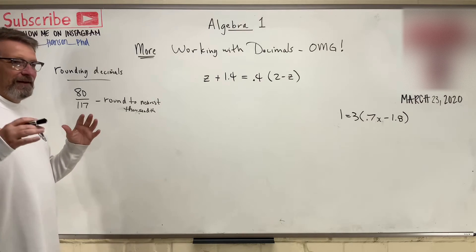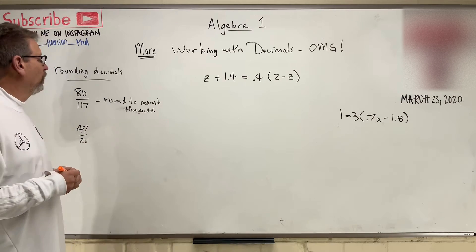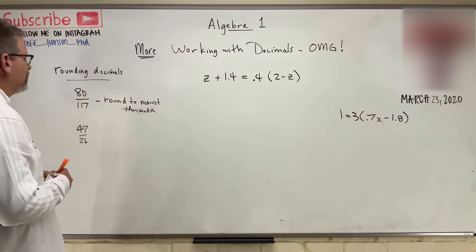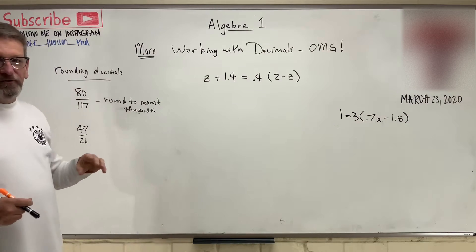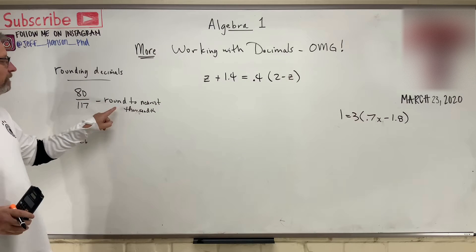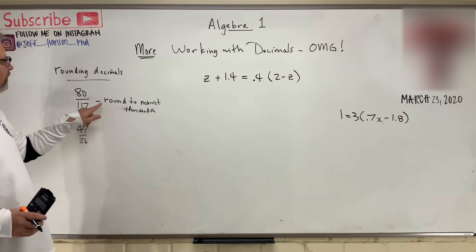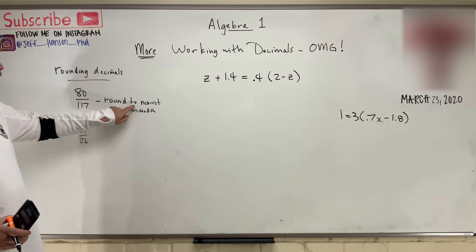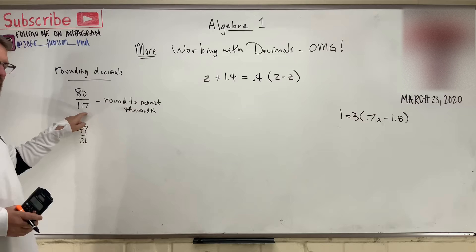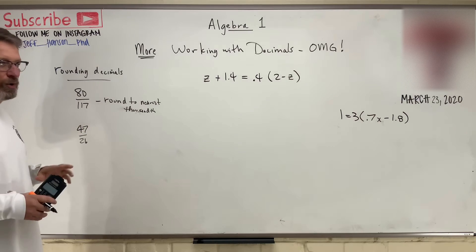Let's talk about decimals. First thing, let's talk about if you had to use your calculator, what would it look like. So here's a problem, and we're going to talk about rounding with decimals. Let me grab my calculator. This problem says take 80, divide it by 117, and round to the nearest thousandth. Now, this is not one of those we can just do in our head. We're going to have to use our calculator.